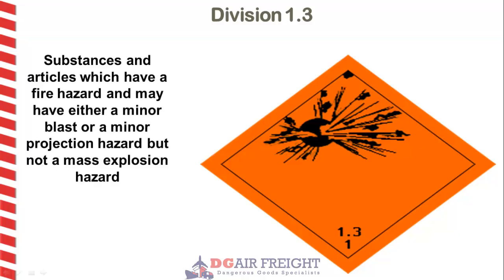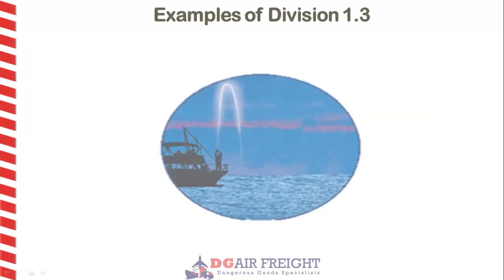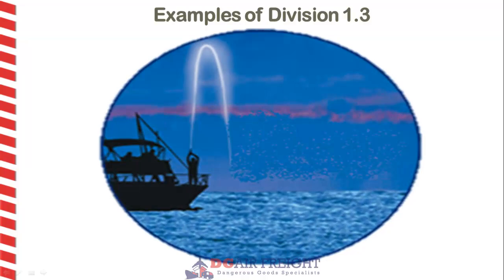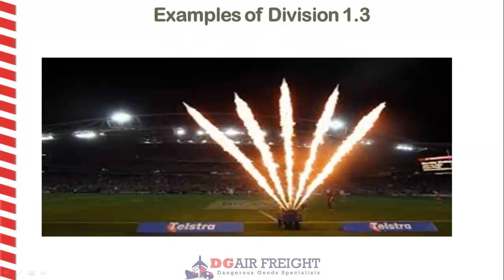Division 1.3 are explosives that have a fire or a heat hazard and may have a minor blast or a minor projectile hazard. Examples are distress flares and flash pots, shown here at a football match.